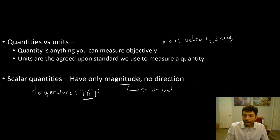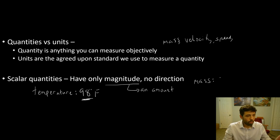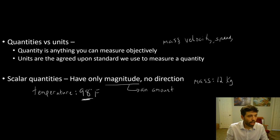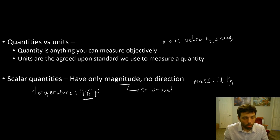Another example of a scalar quantity is mass, which we measure in kilograms. What's the mass of that TV? It's 12 kilograms. There's the magnitude, there are the units, and we're done. No direction — you wouldn't say 12 kilograms southeast. That wouldn't make any sense.